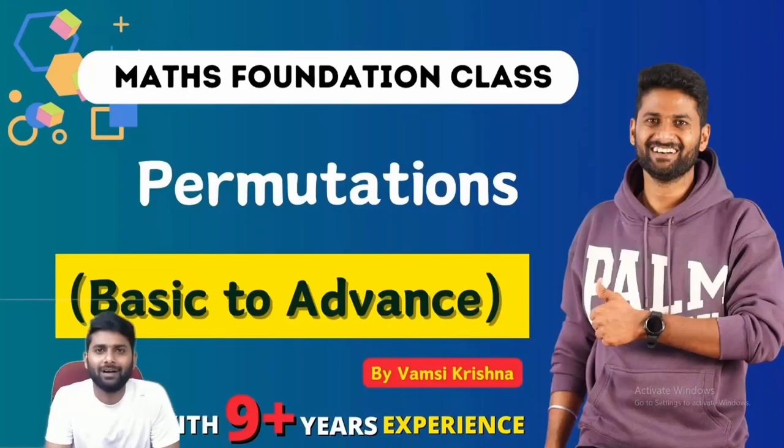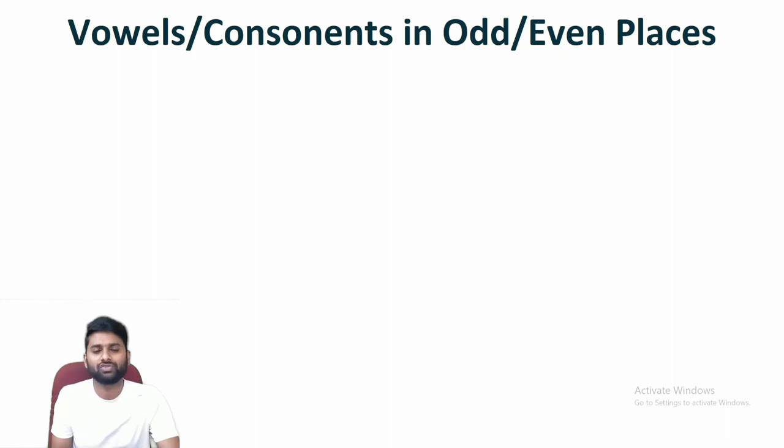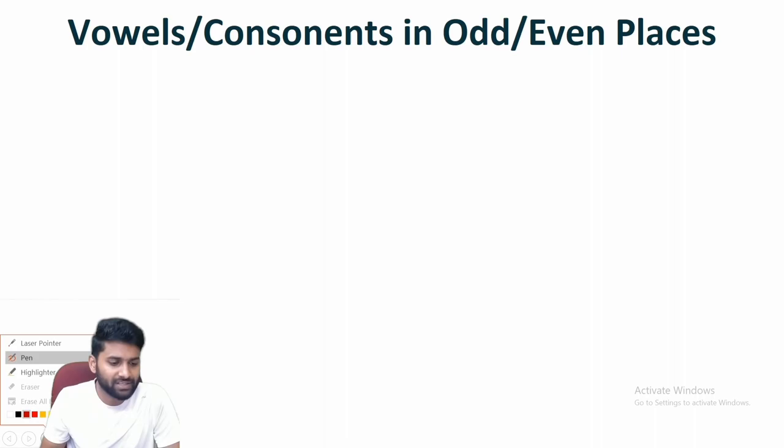Hi everyone, welcome back to my station. In this video, I am going to cover one more model in permutations. So all about vowels or consonants in odd places or even places. Let me tell you one example to understand this.